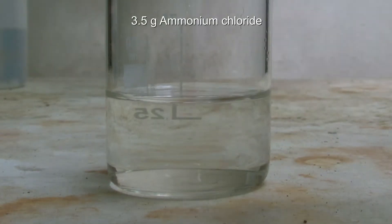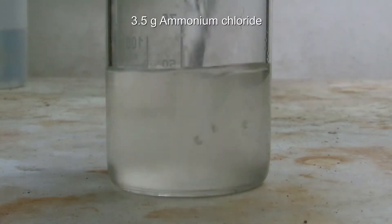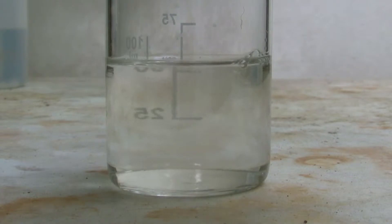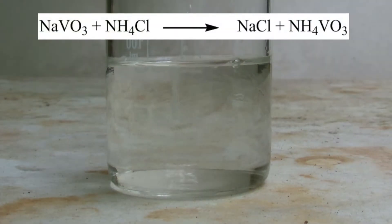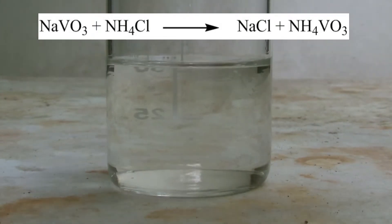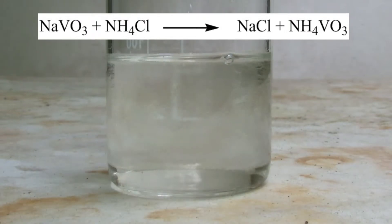Then a saturated solution of 3.5 grams of ammonium chloride and water is added to the filtrate. Now, an ion exchange reaction takes place where the sodium metavanadate reacts with the ammonium chloride to form sodium chloride and ammonium metavanadate. The latter has very low solubility.